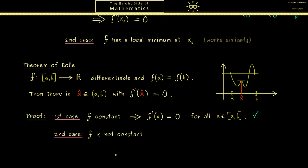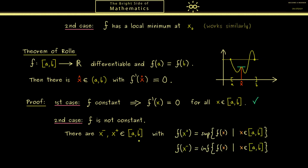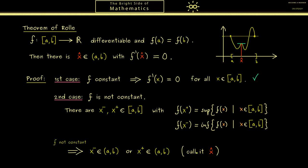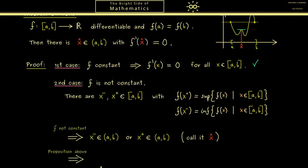The only interesting case is that f is not a constant function. Now we can use that f is defined on a compact set and by assumption is differentiable — which in particular means it is continuous. For continuous functions on compact sets we know the image is also compact, as proven in part 30. In particular, we always find a point x-minus where the minimum occurs and a point x-plus where the maximum occurs. Now one of these points could lie on the boundary, but because the function is not constant, the other one cannot. Exactly that non-boundary point we choose as x-hat. This gives us the global maximum or minimum in the interior, which is of course also a local one. Hence we apply the proposition from before, which tells us the derivative vanishes at the local extremum — and with this the proof is finished.